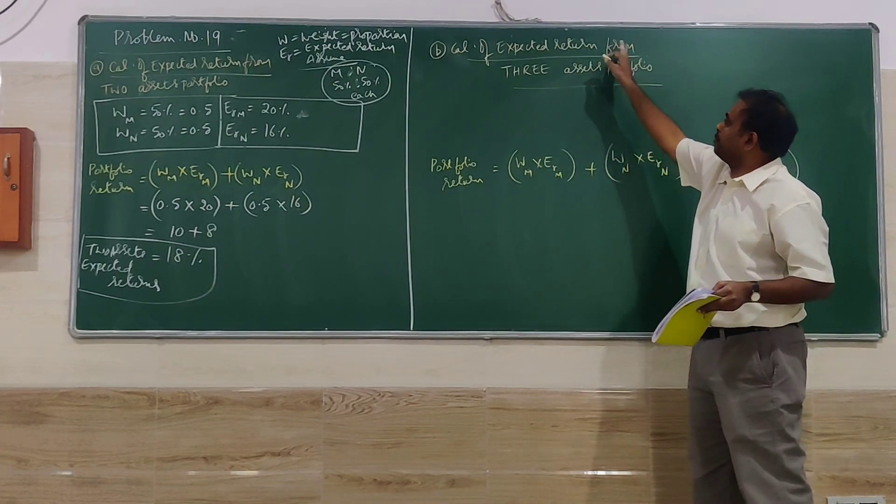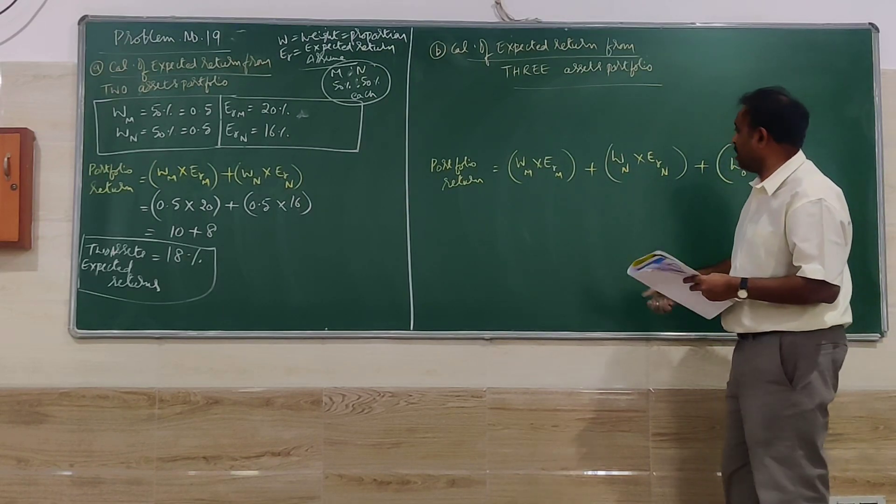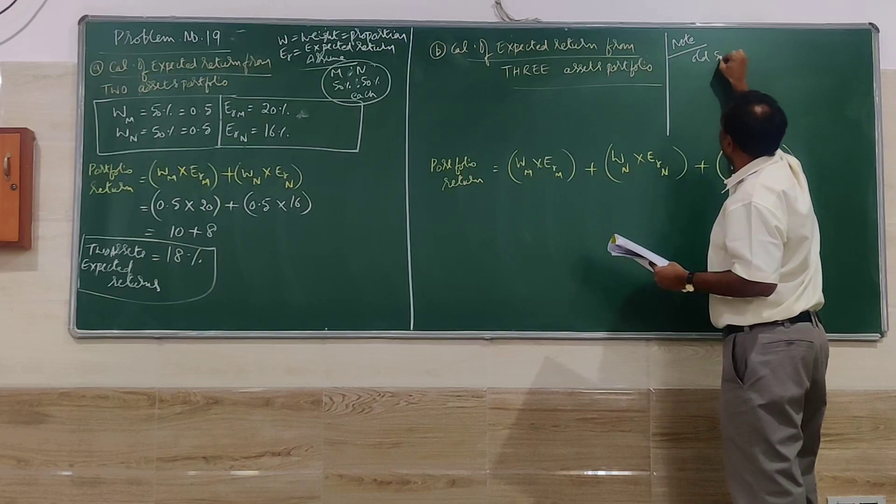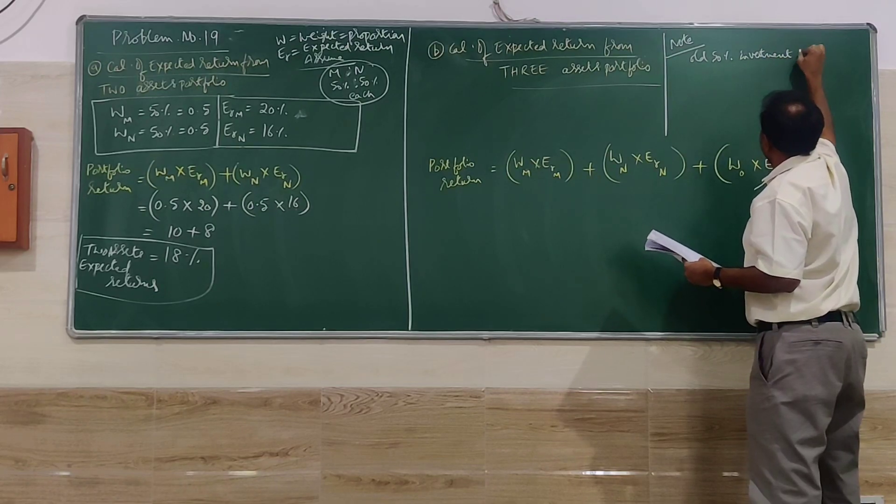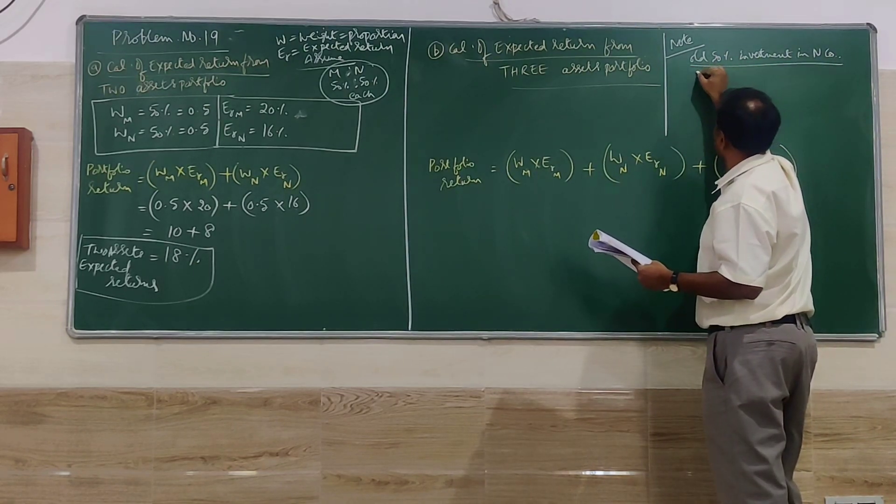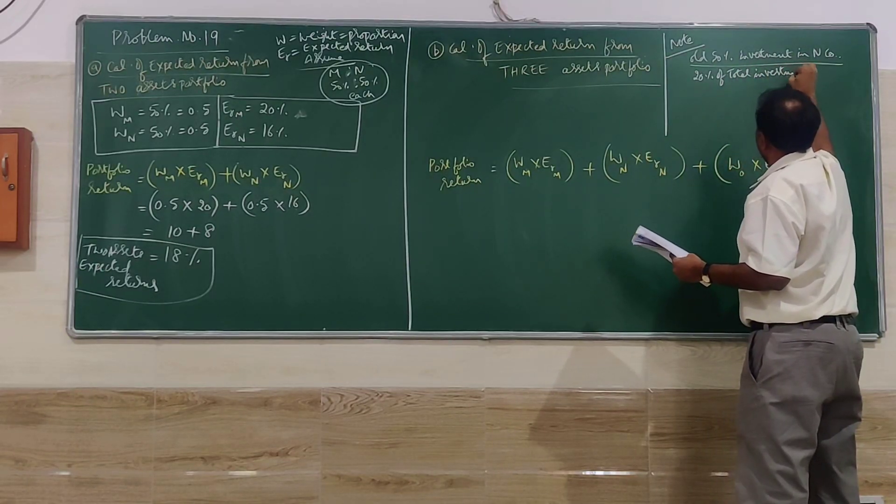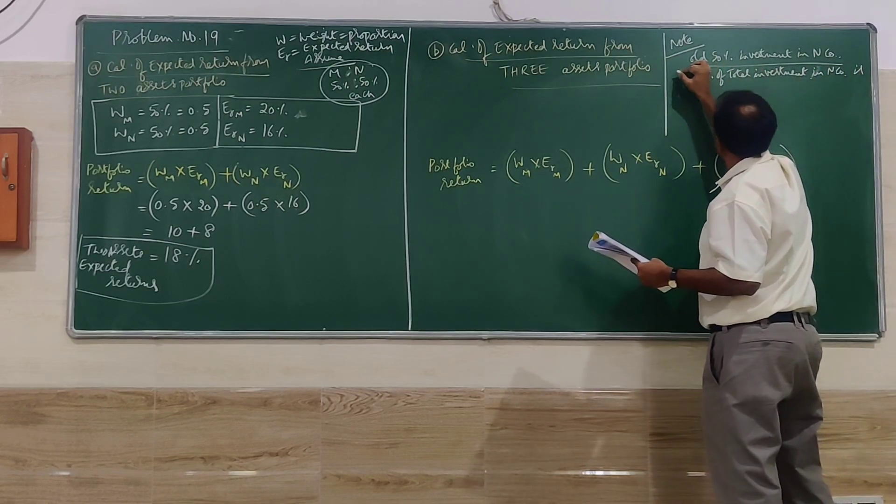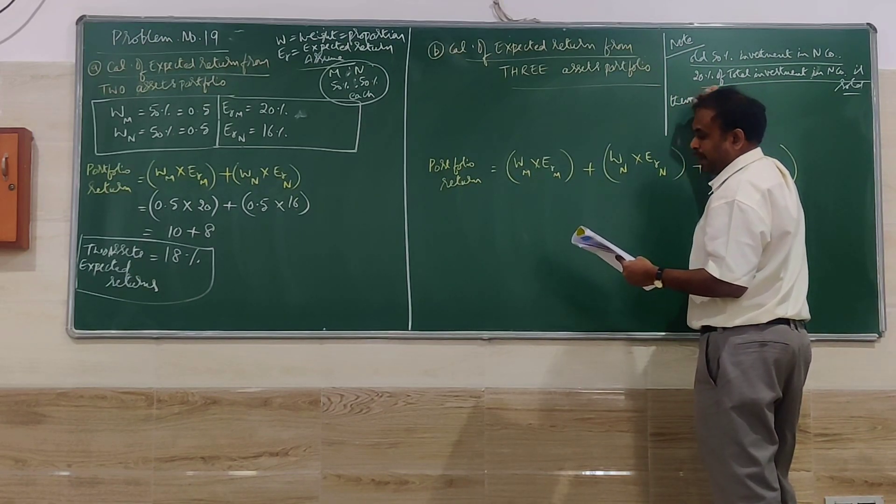I am calculating the expected return from 3-asset portfolio. First, we have to remember the most important point: the old investment was 50% in N company. Now 20% is sold—20% of total investment in N company is sold.